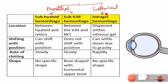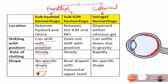The subhyloid hemorrhage refers to blood just below the hyloid — the condensed collagen at the peripheral part of the vitreous humor that separates the vitreous from the retina. An important feature of subhyloid hemorrhage is that it can shift with change in patient position. The rate of clotting is very slow, and the shape can be non-specific or it can look like a boat-shaped hemorrhage.